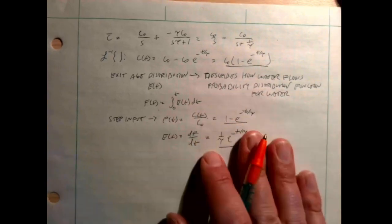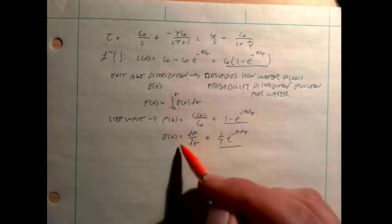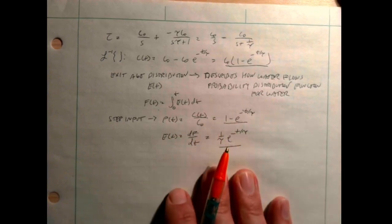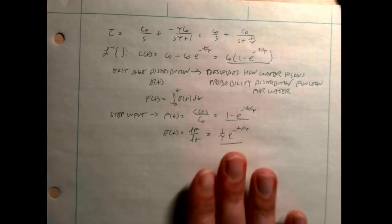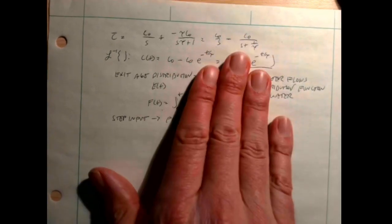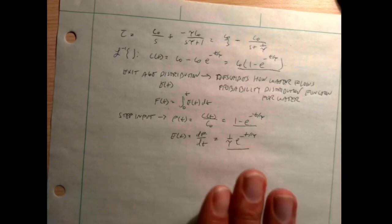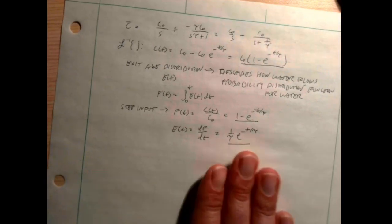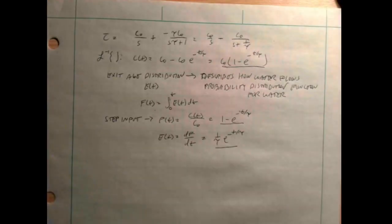We can then use this E(t) function to predict what would happen if water flows through with some other kind of input function later. I wanted to go through how Laplace transforms can be used to analyze this problem and arrive at the E(t) function. From here we'll build up to look at a problem where we have more than one CSTR in series.